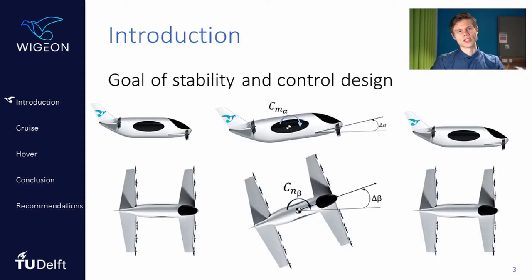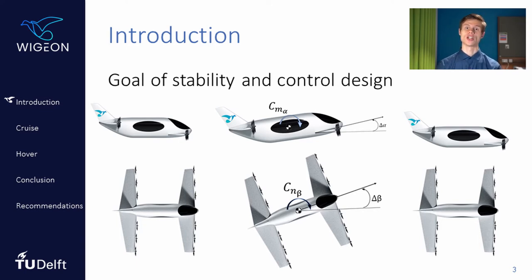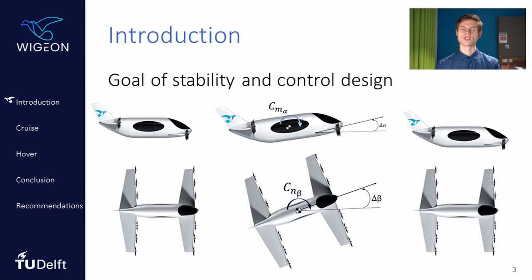So what do we mean by stability and controllability? Stability refers to the ability of the aircraft to generate restoring forces and moments when subjected to a small disturbance. Controllability, on the other hand, refers to the ability of the pilot to reach any desired state of the aircraft using the available inputs. These two are often treated together because they are affected by similar design variables and can sometimes be conflicting in design.